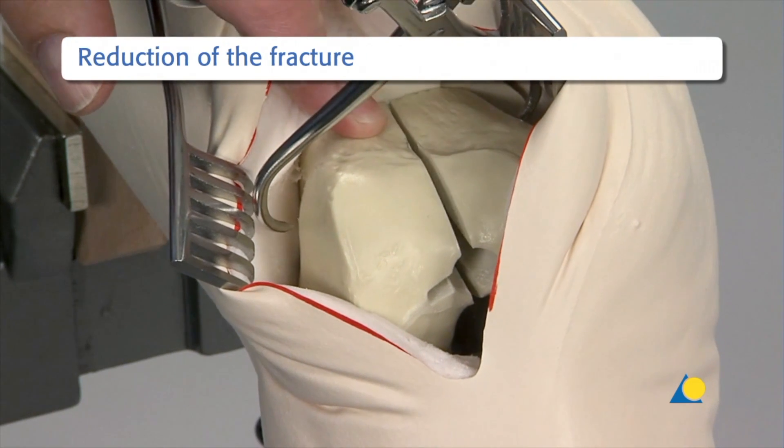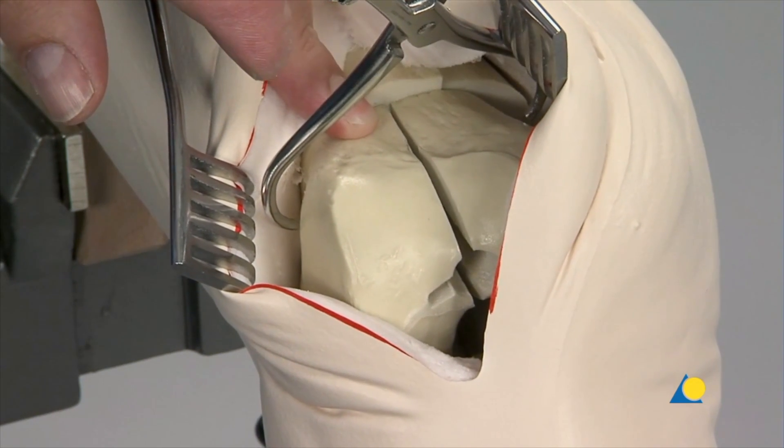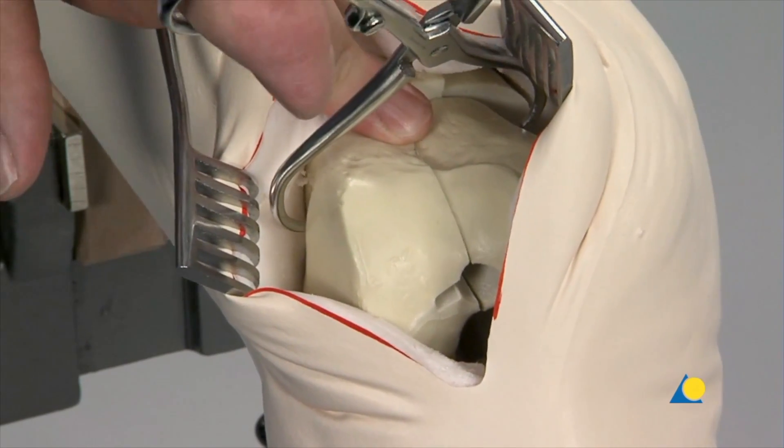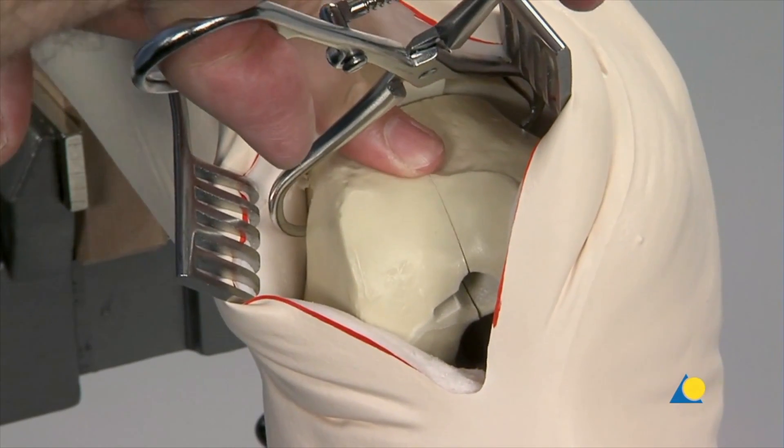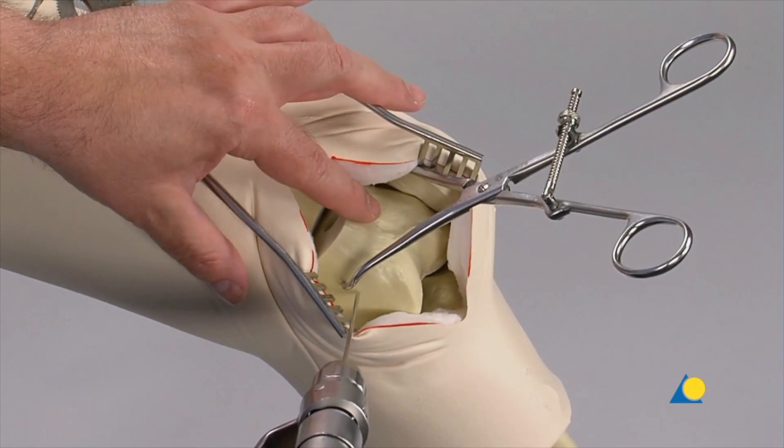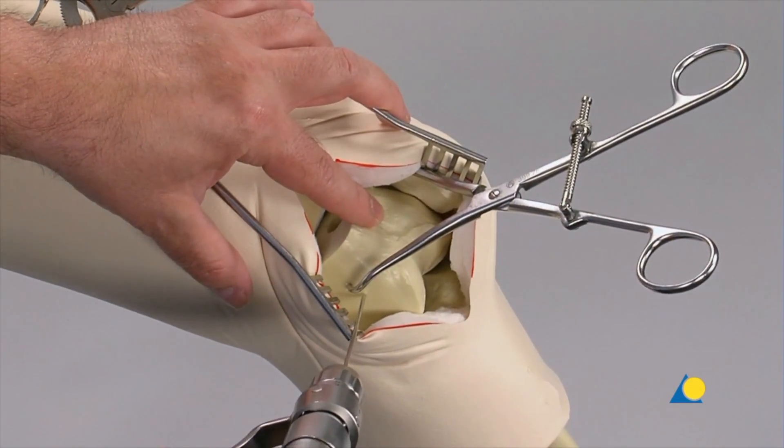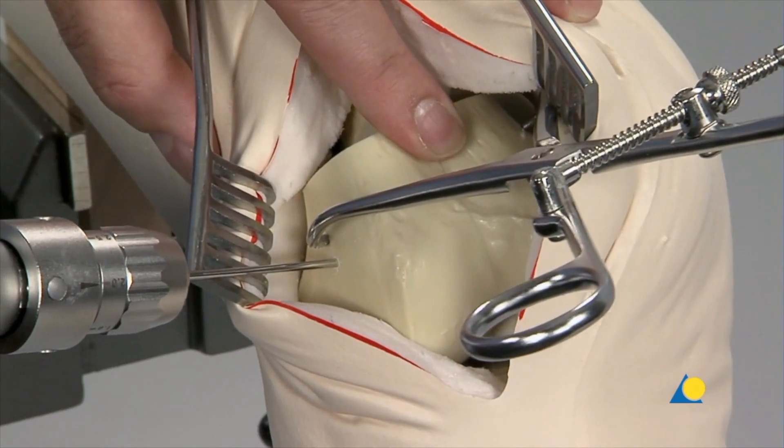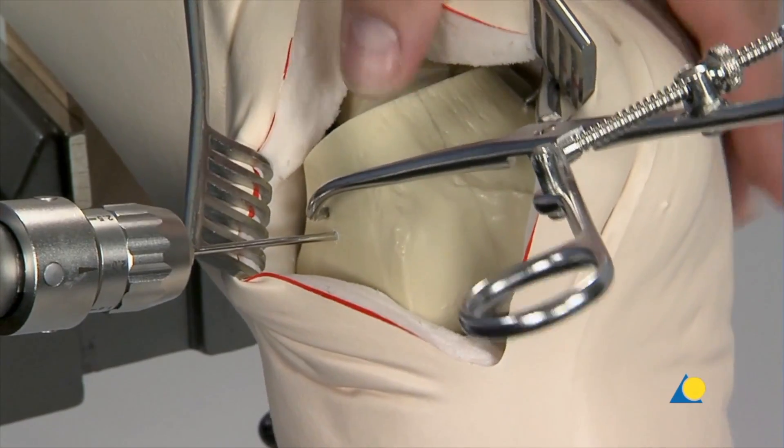The large pointed reduction forceps is used to reduce the joint block. The reduction of the joint block is first secured with two centrally placed K-wires. It is important to use two K-wires to ensure rotational stability.